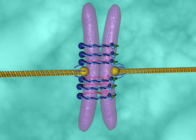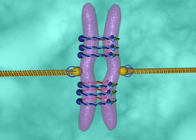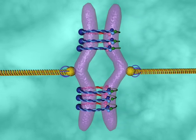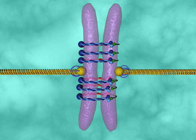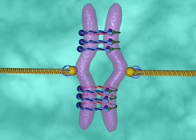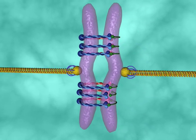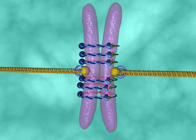One of the largest unanswered questions in cell division is how does the kinase know when chromosomes are correctly attached. We know that tension is an indicator of a correct attachment, but we do not know how the kinase senses this tension.